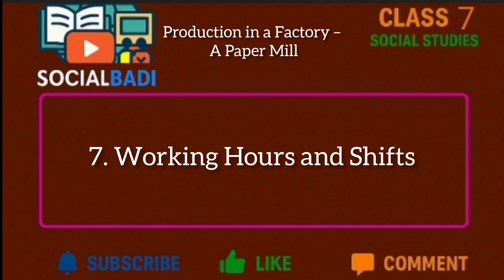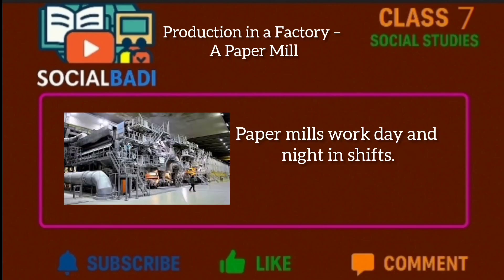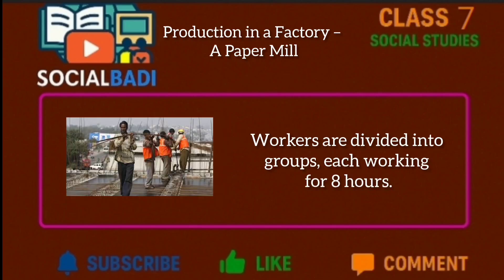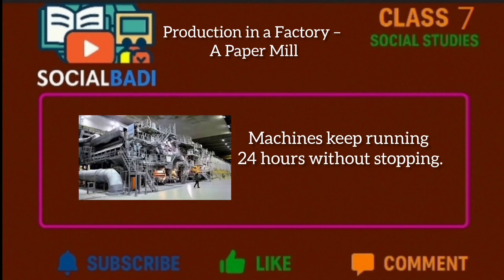Working hours and shifts: Paper mills work day and night in shifts. Workers are divided into groups, each working for 8 hours. Machines keep running 24 hours without stopping.